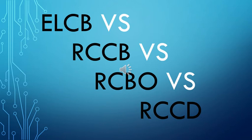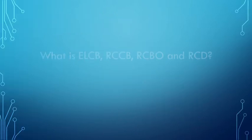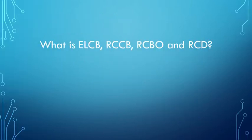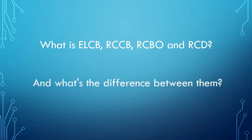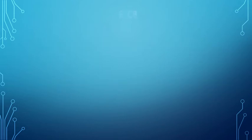ELCB vs. RCCB vs. RCBO vs. RCD. What is ELCB, RCCB, RCBO, and RCD? And what's the difference between them?